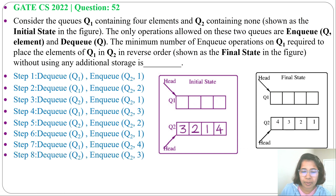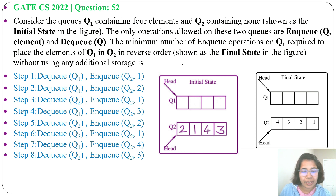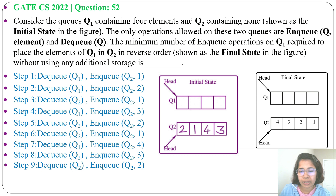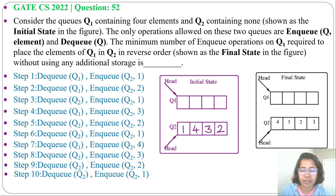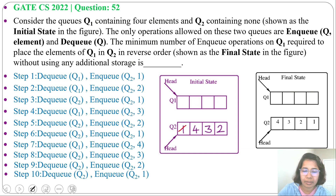Step 8: DQ from Q2 and NQ at Q2 — 3 will be after 4. Next DQ from Q2 and NQ at Q2, dequeuing 2 and enqueuing 2 at Q2, giving 4, 3, 2. One more DQ from Q2 and NQ at Q2 — we dequeue 1 and insert 1 back into Q2.